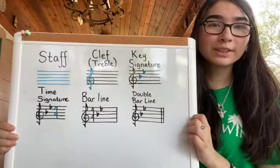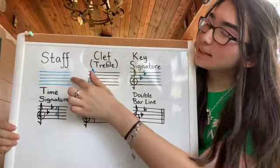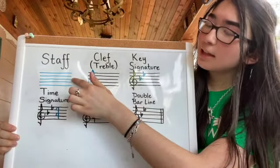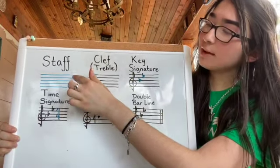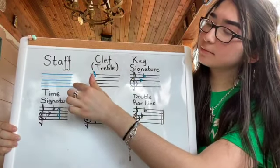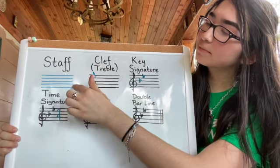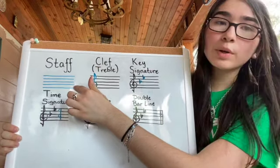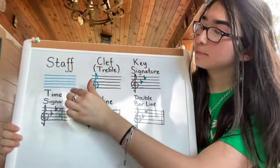The first thing we're going to learn is the staff. The staff consists of five lines and four spaces. We read the staff from left to right.